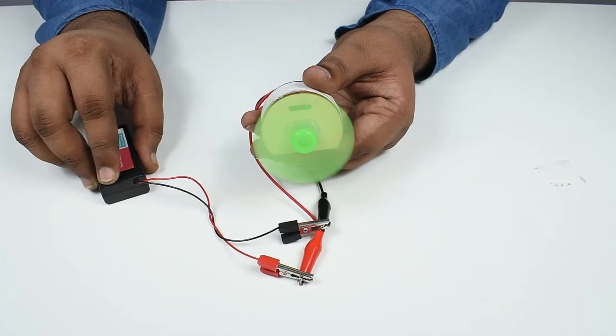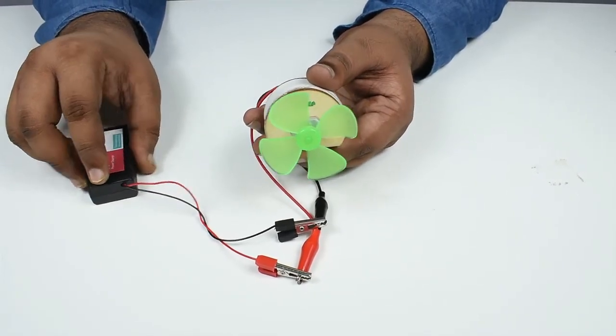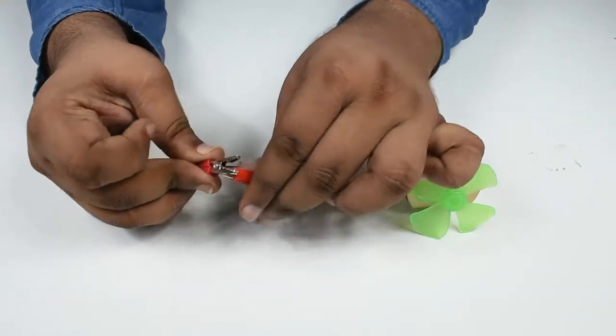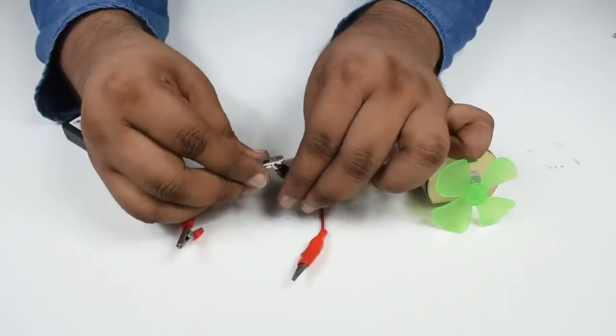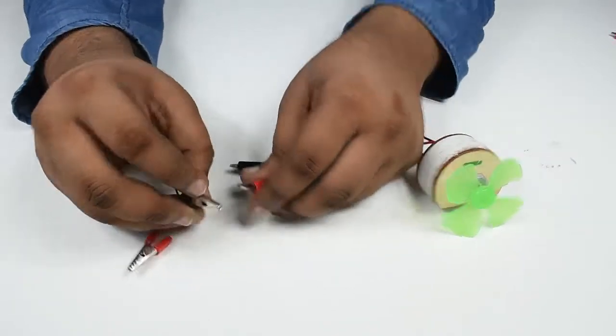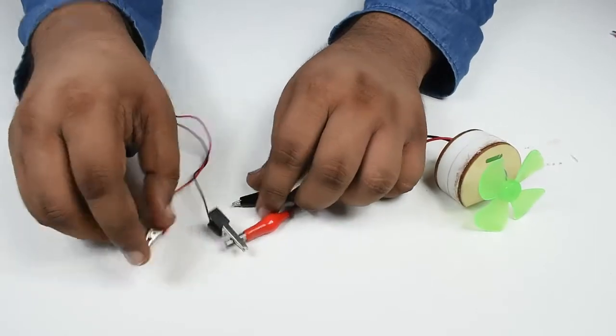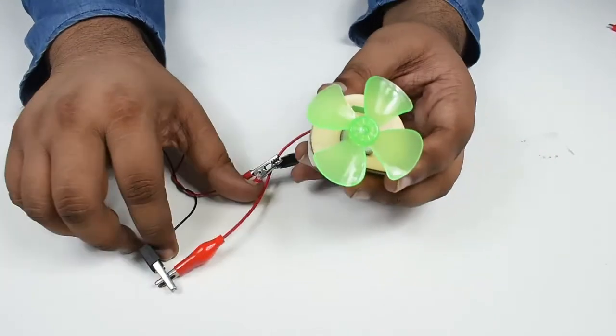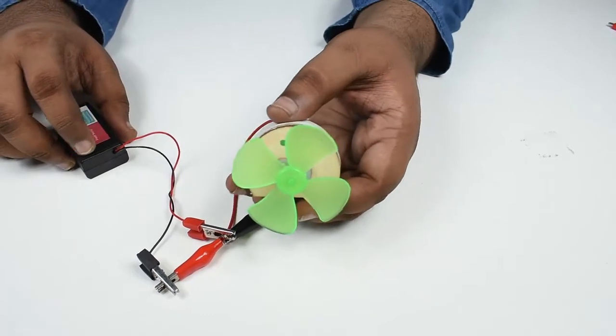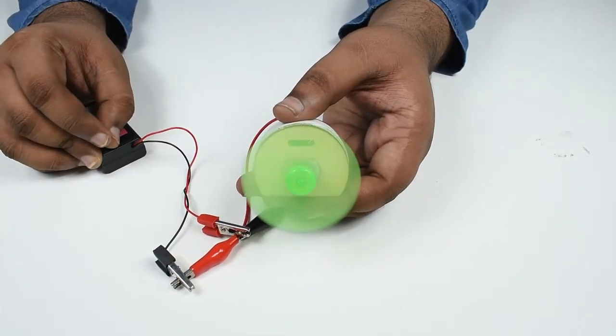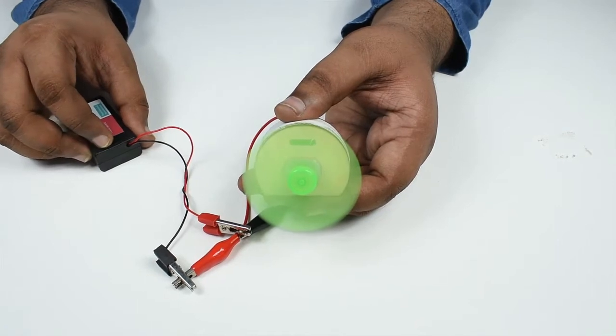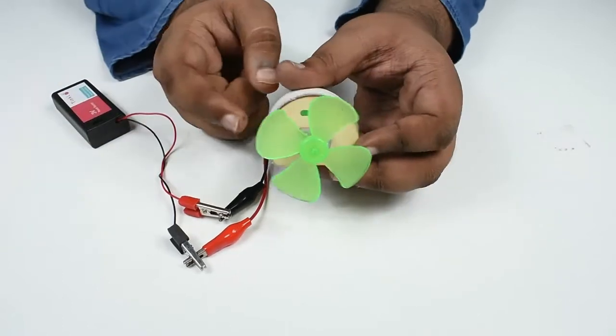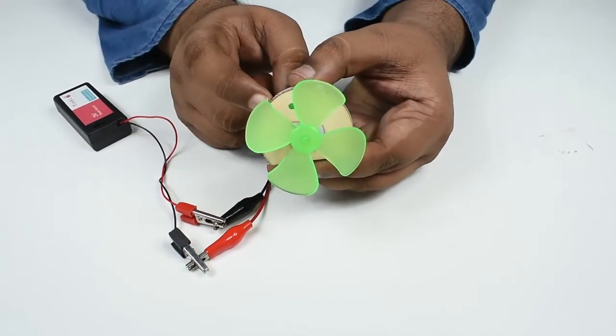Now observe what happens when I change these terminals. I am interchanging the terminals. Now when I switch on, observe the direction in which it rotates. As you have observed, by changing the terminals we can change the direction of rotation of this motor.